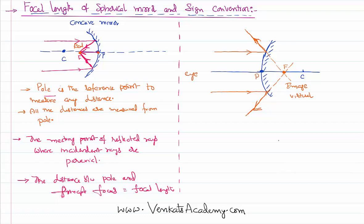In the case of the convex mirror, the extended light rays meet at a particular point which is called the principal focus. The distance between the pole and the principal focus is also called the focal length.